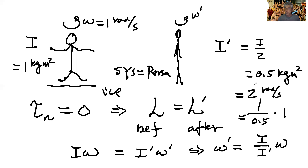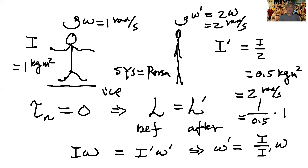So you can see omega prime is now spinning twice as fast — 2 rad/s compared to the original 1 rad/s. You can see how interesting the conservation of angular momentum can be. Hopefully you are learning more about angular momentum.